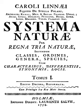Linnaeus believed in God's creation, and that there were no deeper relationships to be expressed. He is frequently quoted to have said, 'God created, Linnaeus organized,' in Latin: 'Deus creavit, Linnaeus disposuit.' His sexual system, where species with the same number of stamens were treated in the same group, was convenient but in his view artificial. The classification of animals was more natural — for instance, humans were for the first time placed together with other primates, as Anthropomorpha.